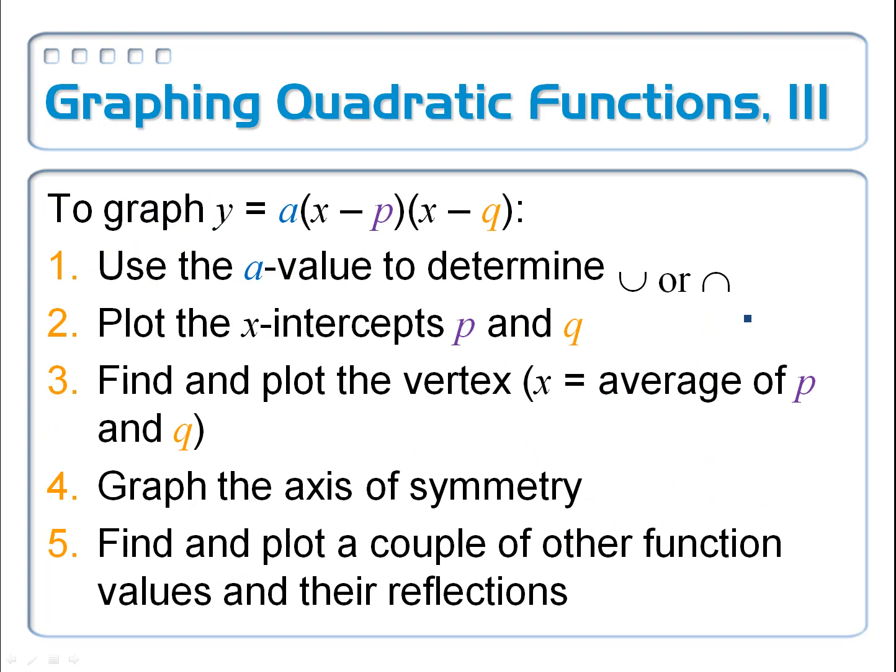So if I wanted to graph one of these in intercept form, the first thing that I want to do is look at the a value. The a value is going to determine whether we've got ourselves a beard, and that's when the a is positive, or a mustache when it's negative. Plot these x-intercepts, the p and the q. And just remember,